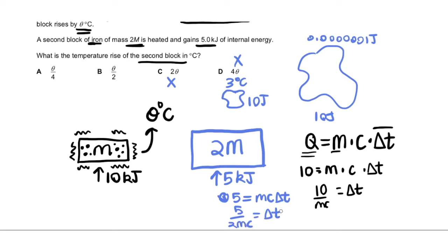5 divided by 2 is 2.5 and 10 divided by 1 is 10. So comparing 10 to 2.5, you can clearly see that the temperature rise of the heavier object and the one supplied less energy too is going to be one-fourth less than the smaller object. And so that's your answer.